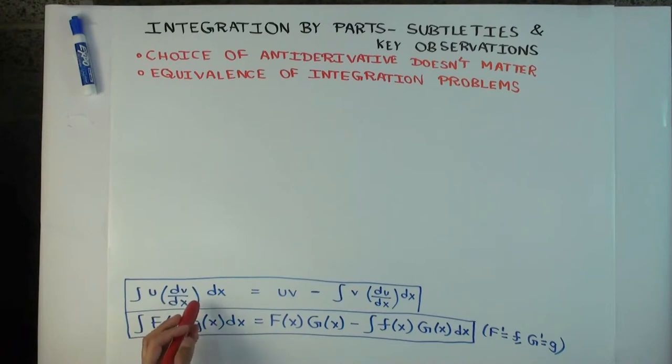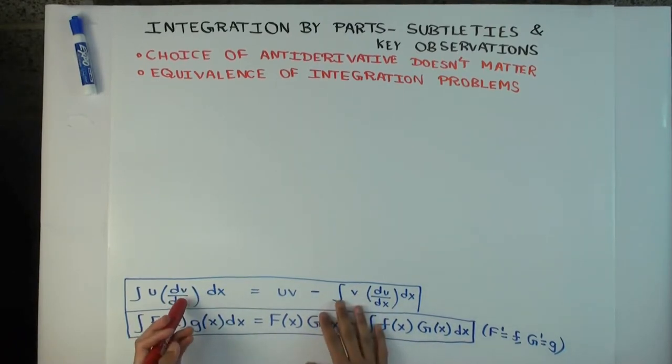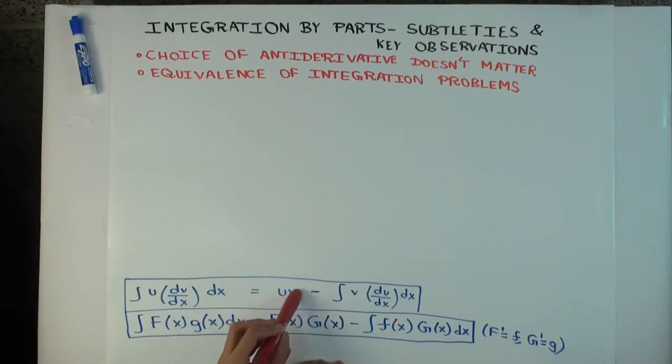Now, when you're integrating, there isn't a unique answer. Rather, there is a bunch of answers which differ by constants. So you actually have a number of different choices for the antiderivative, which is v or G(x). You have a number of different choices for this, all differ by constants. And you may be wondering which one is good. Is there some rule which says that you should pick the best one? And if you don't pick that, can you run into problems?